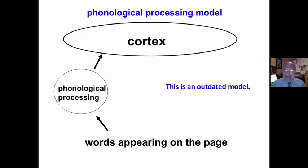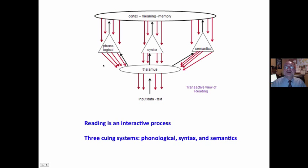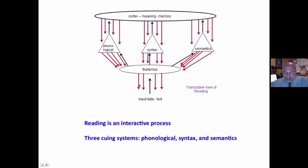Most standardized measures that provide quantifiable data are based on this outdated model of reading — the phonological processing model — which defines reading simply as sounding out words. Words appear on the page, we bark at them, we sound them out, and they go from the page to our thalamus up to the cortex. The transactive view of reading, which is supported by the latest research in cognitive neuroscience, says that reading is an interactive process.